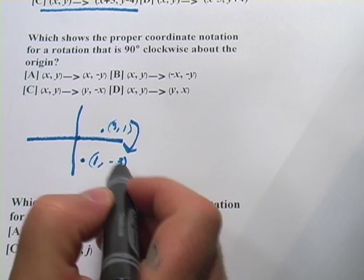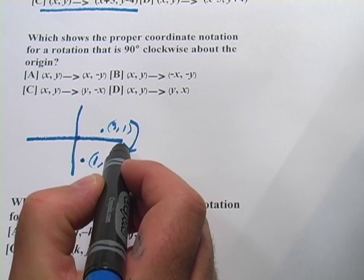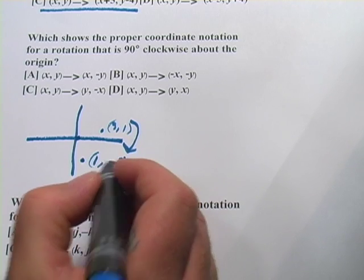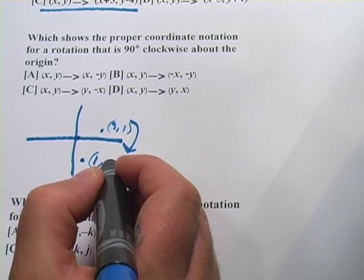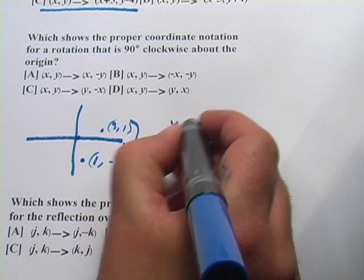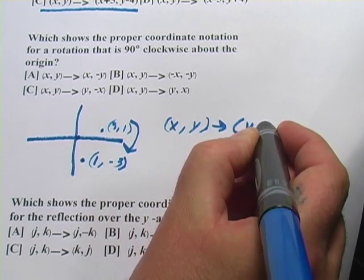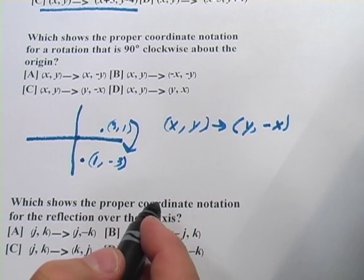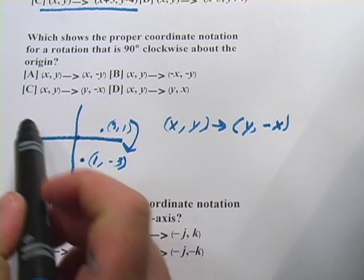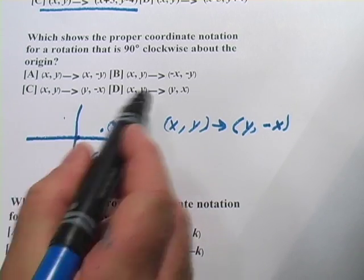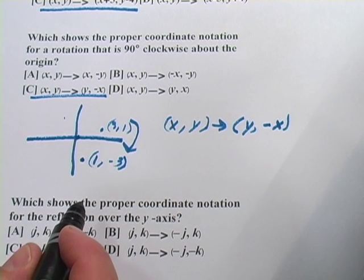So what happened here? We switched the x and the y around, and then we changed the sign of the y. So it went from x, y to y, negative x. So that's what we're going to look for here: x, y becomes y, negative x. And the correct answer would be C.